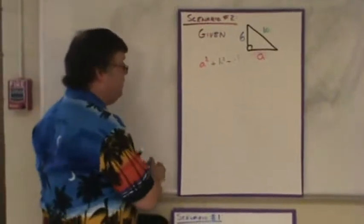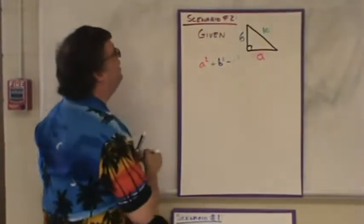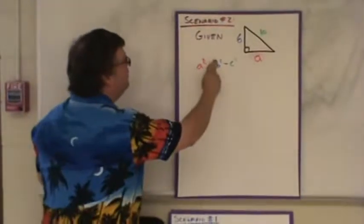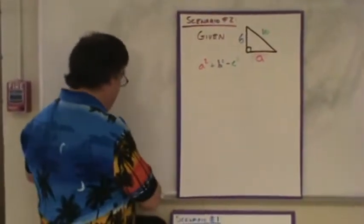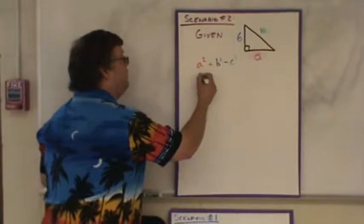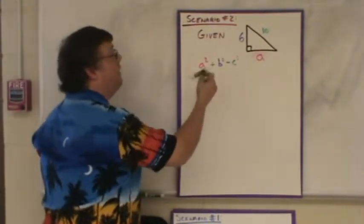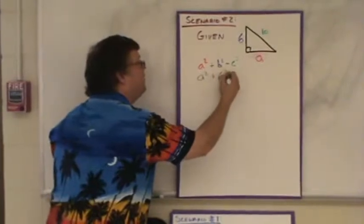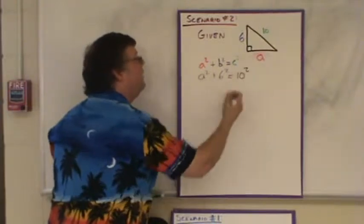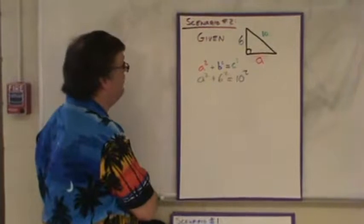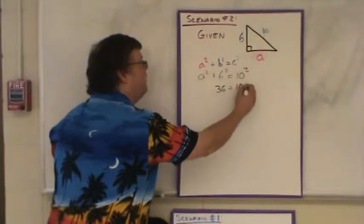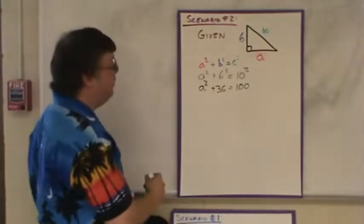Here we have scenario two, where we are given a leg and the hypotenuse. Again, we're going to plug these into the Pythagorean Theorem. This time, we do not know what A is, so it stays as A squared. B is six squared, and that's going to be equal to ten squared, the hypotenuse squared. Six squared is thirty-six. Ten squared is a hundred. We still have to carry down that A squared because we don't know what it is.